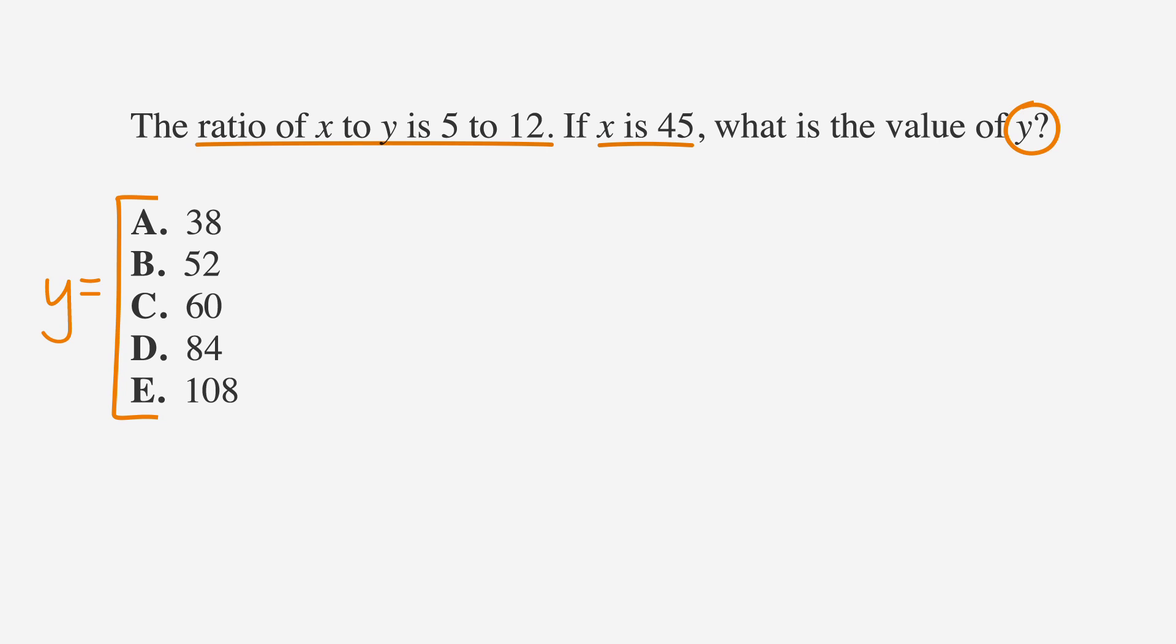The first step is to take the information you've underlined and express it as a ratio. Then, you'll create an equation to solve for x. The ratio of x to y can be written as x over y. Is means equals, and 5 to 12 can be written as 5 over 12.